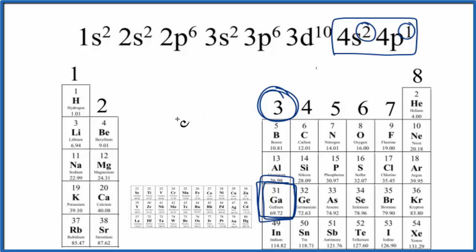If we wanted to draw the Lewis structure, we could write Ga and we could put three electrons around it. We could put one, two, and sometimes you'll see it with two next to each other because the 4s², that orbital has two, and then three.